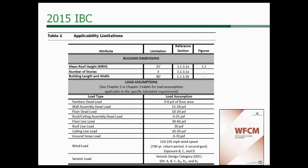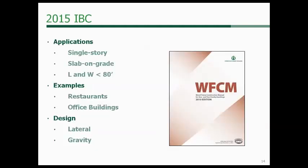The limitations of the WFCM are called out in Chapter 1. These applicability limitations generally deal with the size of the structure and the loads on it. Structures must have a mean roof height less than 33 feet or three stories, and building dimensions less than 80 feet. Examples include houses and small commercial single-story structures like restaurants or small office buildings. You can use the WFCM not just for gravity loads but also lateral loads, making it a great time saver.